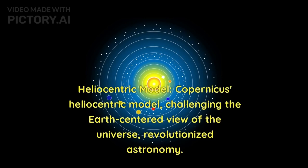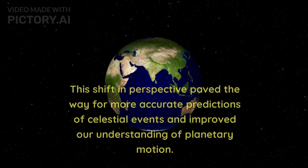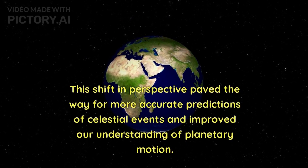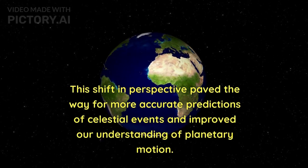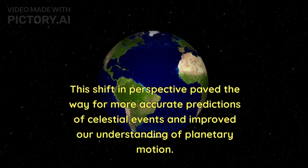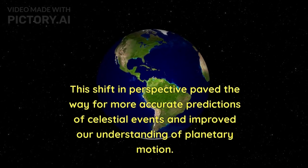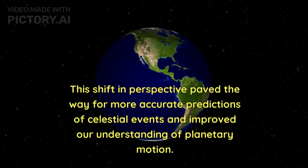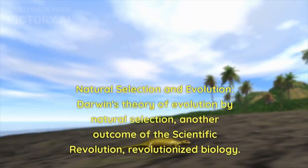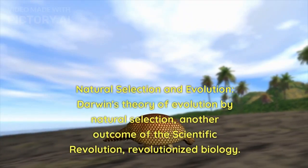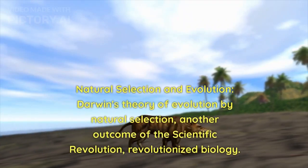Copernicus's heliocentric model, challenging the Earth-centered view of the universe, revolutionized astronomy. This shift in perspective paved the way for more accurate predictions of celestial events and improved our understanding of planetary motion.